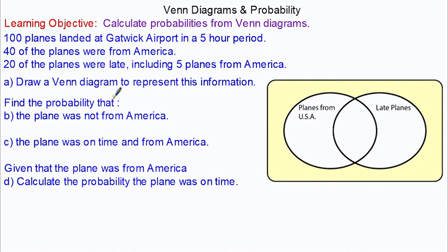For the next question, there were 100 planes landed at Gatwick Airport. 40 of the planes were from America, 20 of the planes were late, including five late from America.